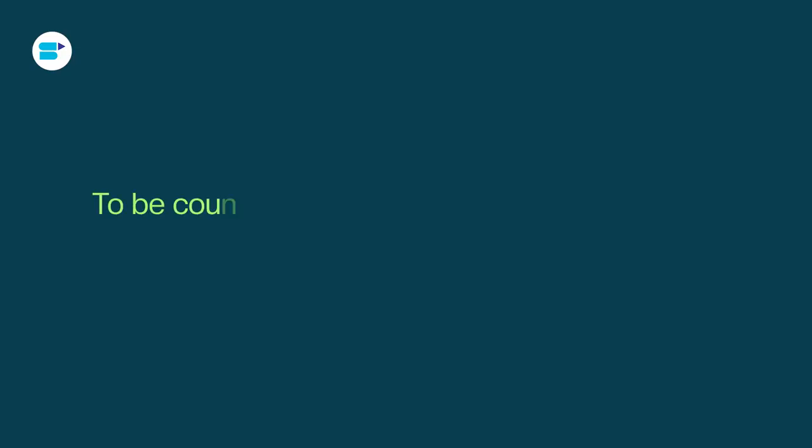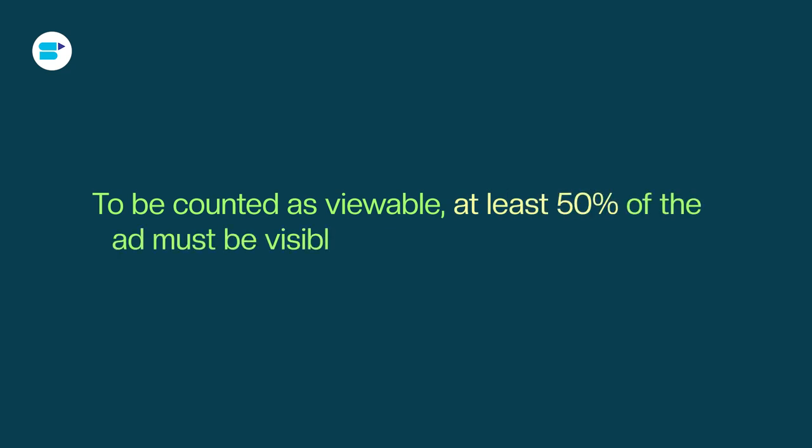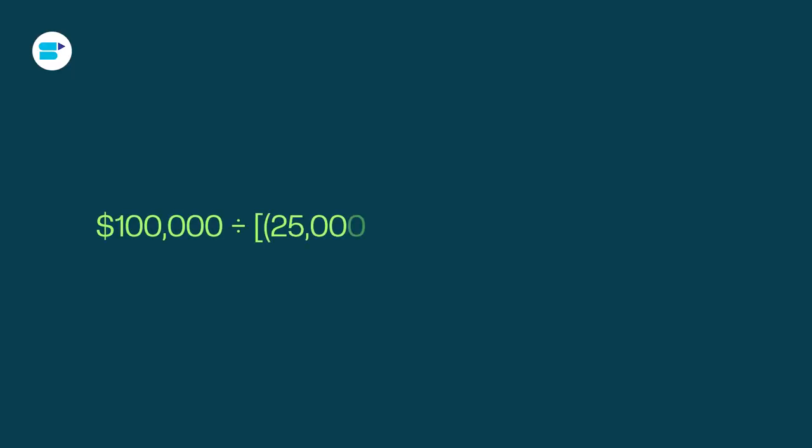Remember: to be counted as viewable, at least 50% of the ad must be visible for more than one second. Plugging these values into the formula — $100,000 divided by 250,000 × 0.68, divided by 1,000 — gives you $5.88. So the result shows that each viewable CPM is $5.88, meaning for every 1,000 viewable impressions of your ad, it will cost $5.88, since 68% of the ad is visible for longer than one second.